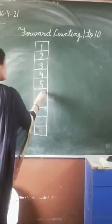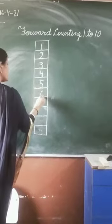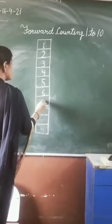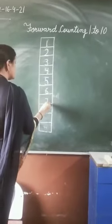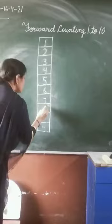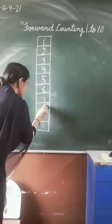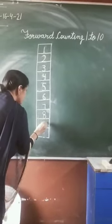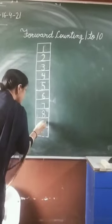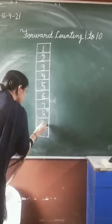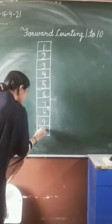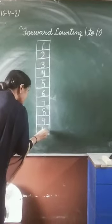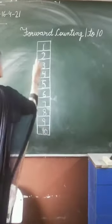What comes after 5? 6. What comes after 6? 7. What comes after 7? 8. What comes after 8? 9. What comes after 9? 10.